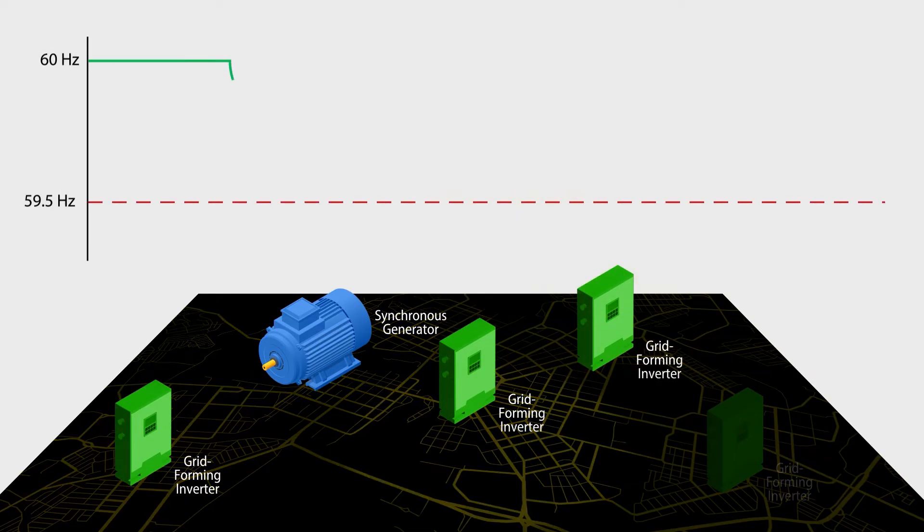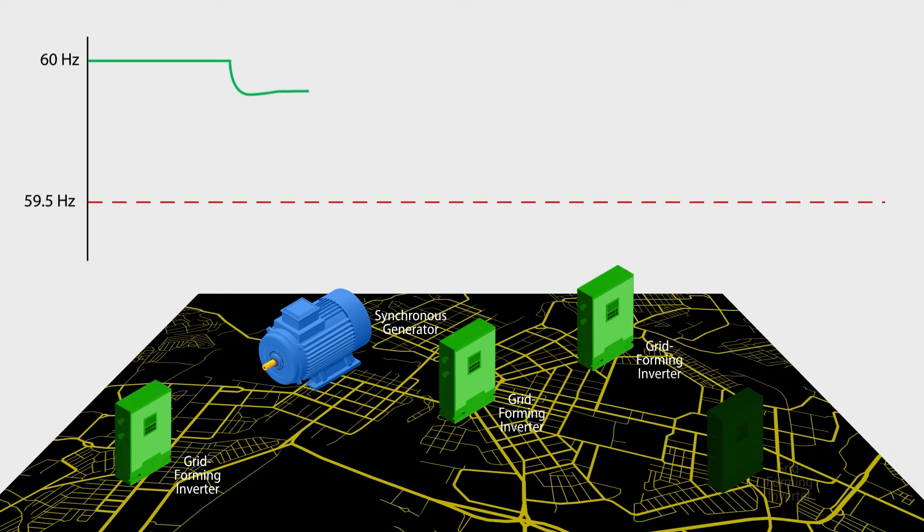when a lightning strike takes out an inverter, the grid forming inverters react fast enough to stop the frequency from falling to the point where the grid sheds load. The grid remains stable, and the remaining resources rebalance the frequency to 60 Hz.